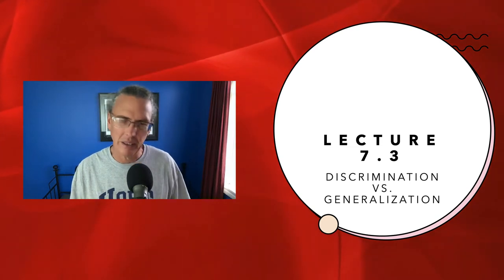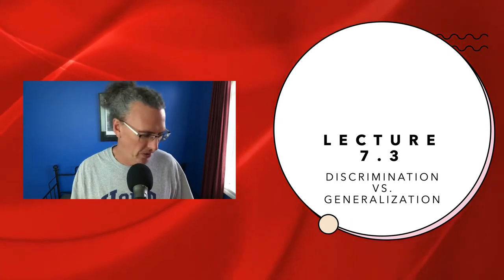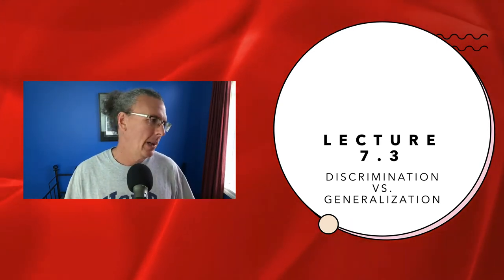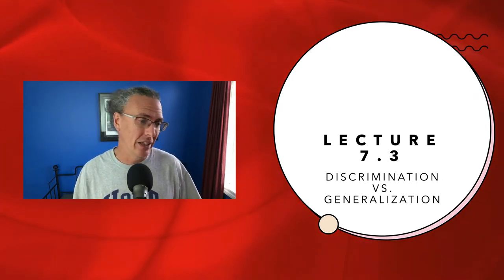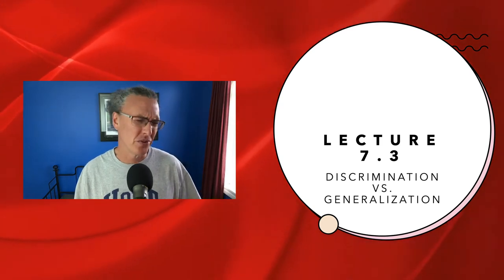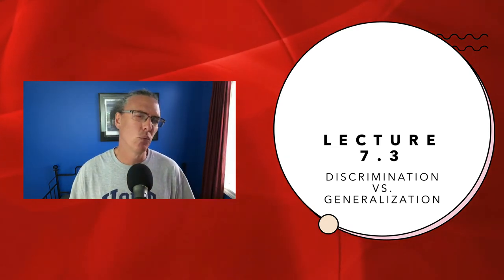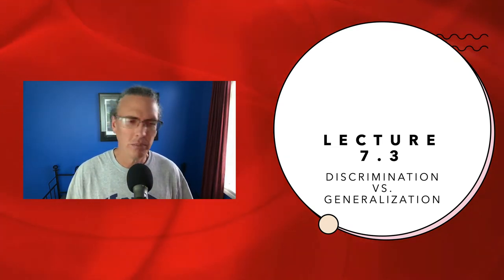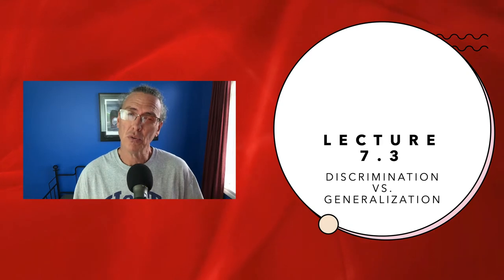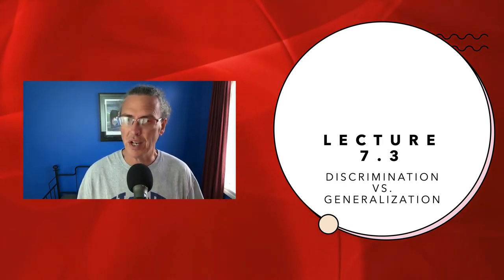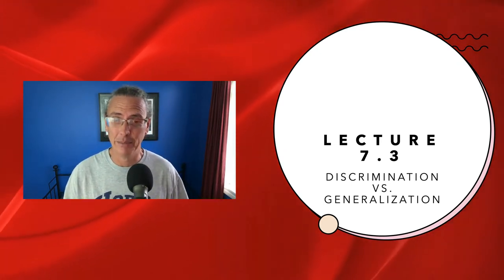This will probably be a pretty quick lecture, but I just want to take something you learned about in the textbook. They're talking about in the context of learning how much that learning generalizes to other objects, and at what point the animal can sort of discriminate between two different things. I really felt like an example from developmental psychology could help you understand the importance of that process — generalizing or discriminating, as the case may be.